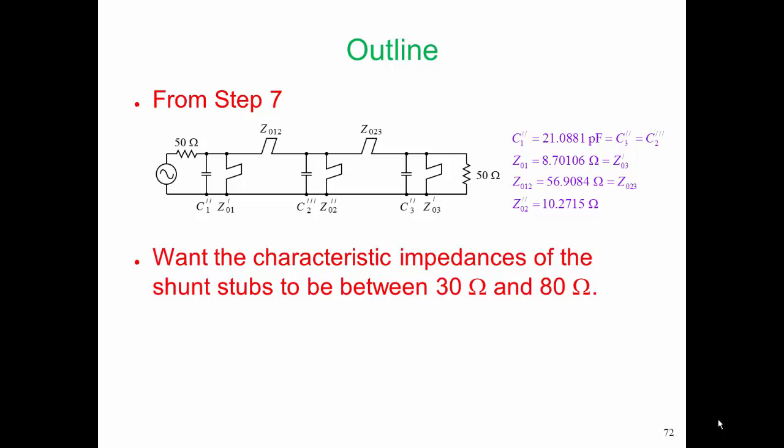The result of step seven is that we ended up with shunt stubs that had characteristic impedances that were too low. Z01 and Z03 had characteristic impedances of 8.7 ohms, and Z02 had a characteristic impedance of 10.27 ohms.